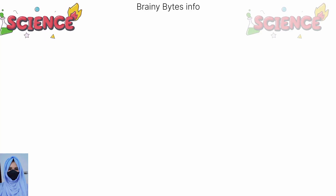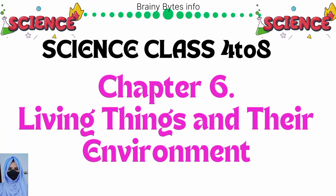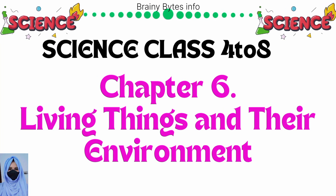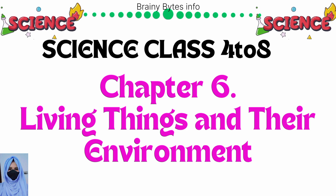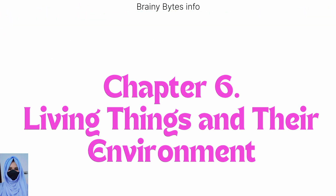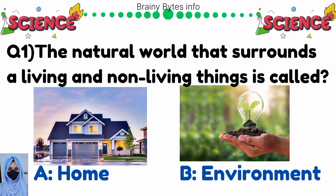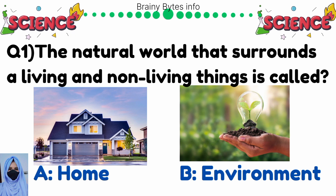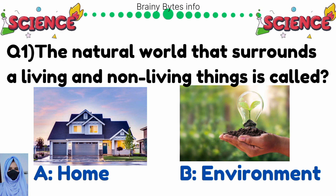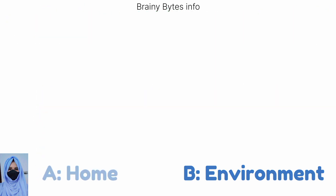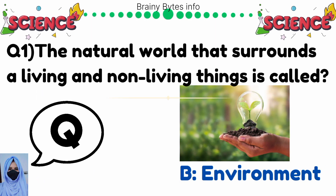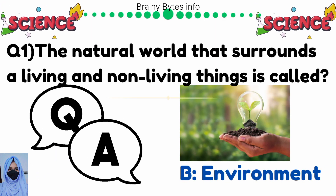Welcome to Brainy Bites Info. Today in this video we learn about living things and their environment. The natural world that surrounds living and non-living things is called — option A: home, option B: environment. Correct answer is environment.